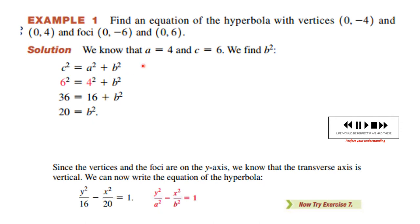So here's an example. Find an equation of the hyperbola that has vertices 0, minus 4 and 0, 4, and foci at 0, minus 6 and 0, 6. Well, first of all, if these are the vertices, you know you have a vertical, up and down, transverse axis. And that means this is y squared over some number squared.